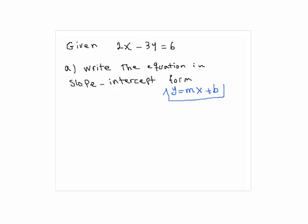To make this equation look like slope-intercept form, we need to simply solve for y. How do you solve for y here? Here we have 2x minus 3y equals 6. To solve for y,